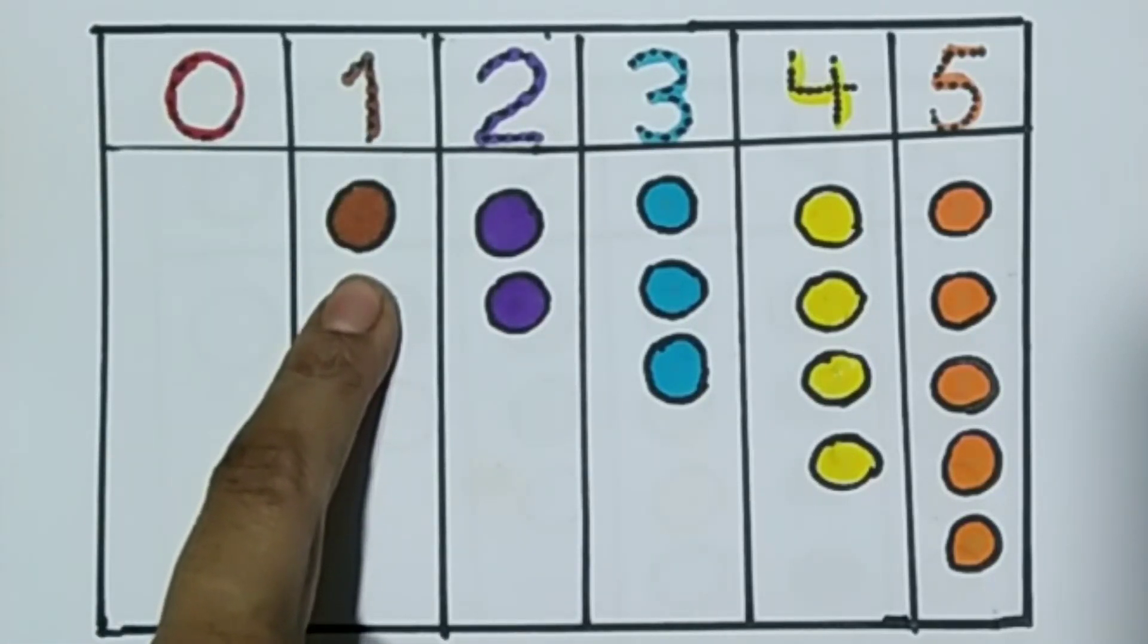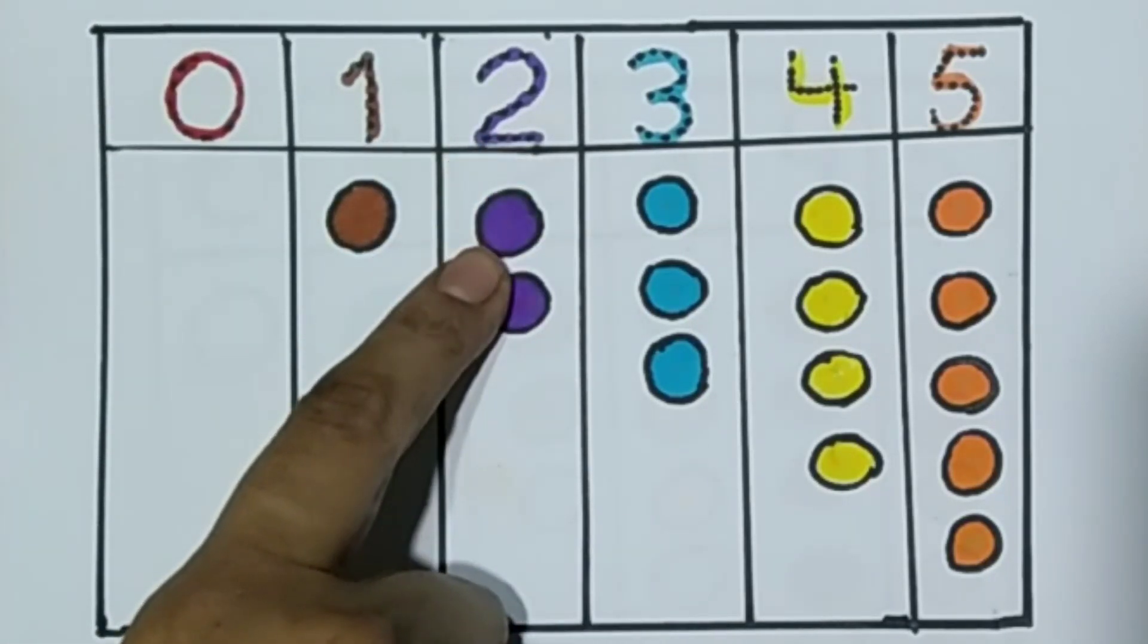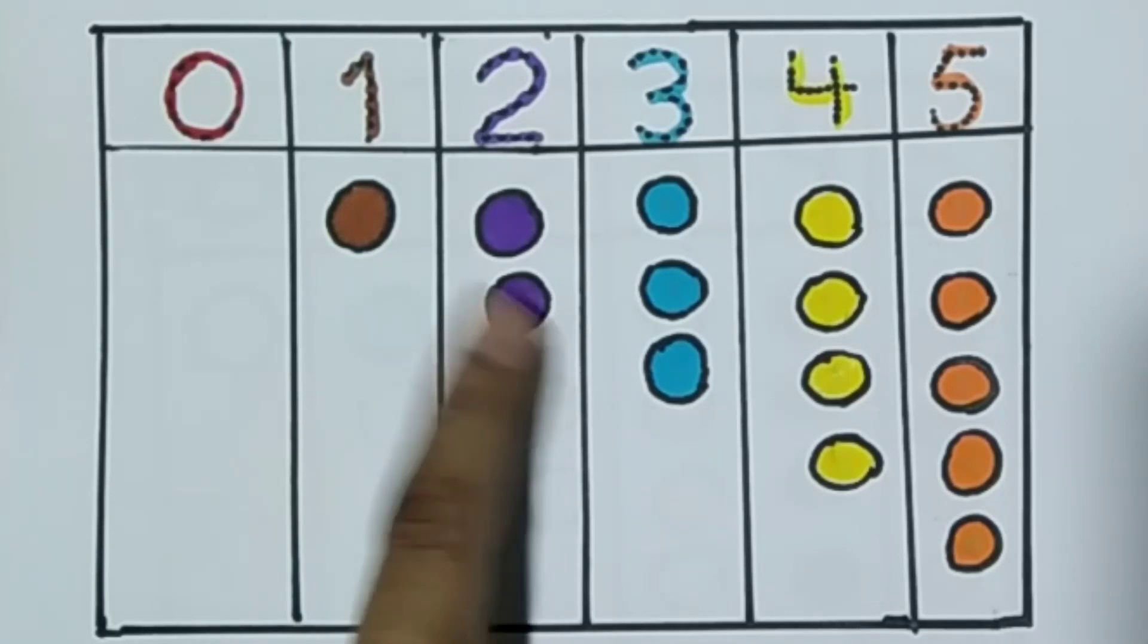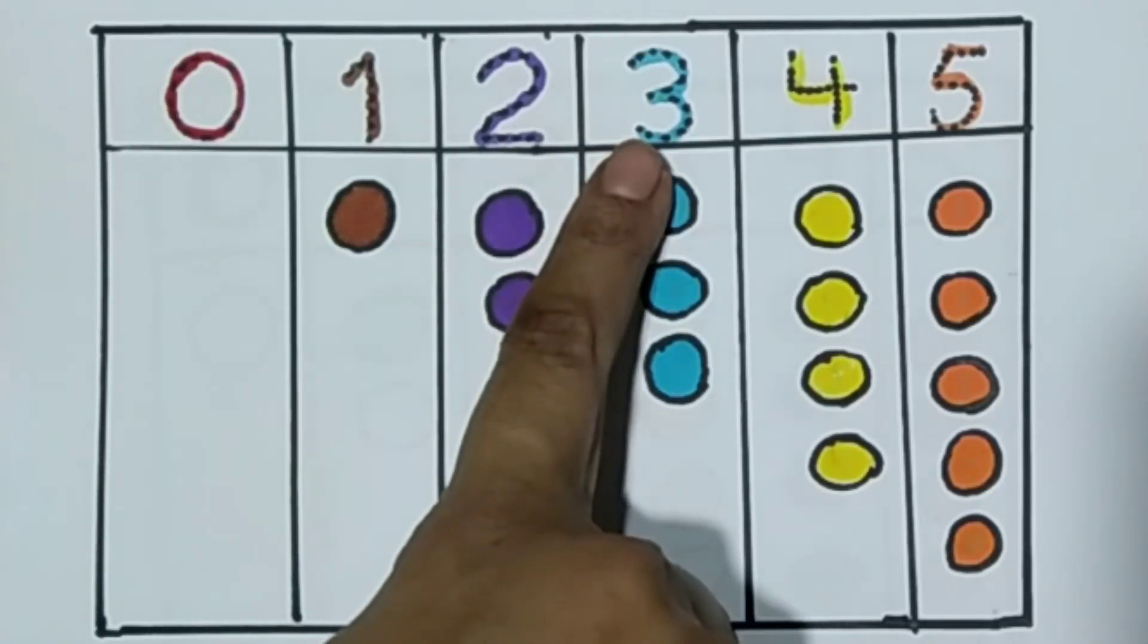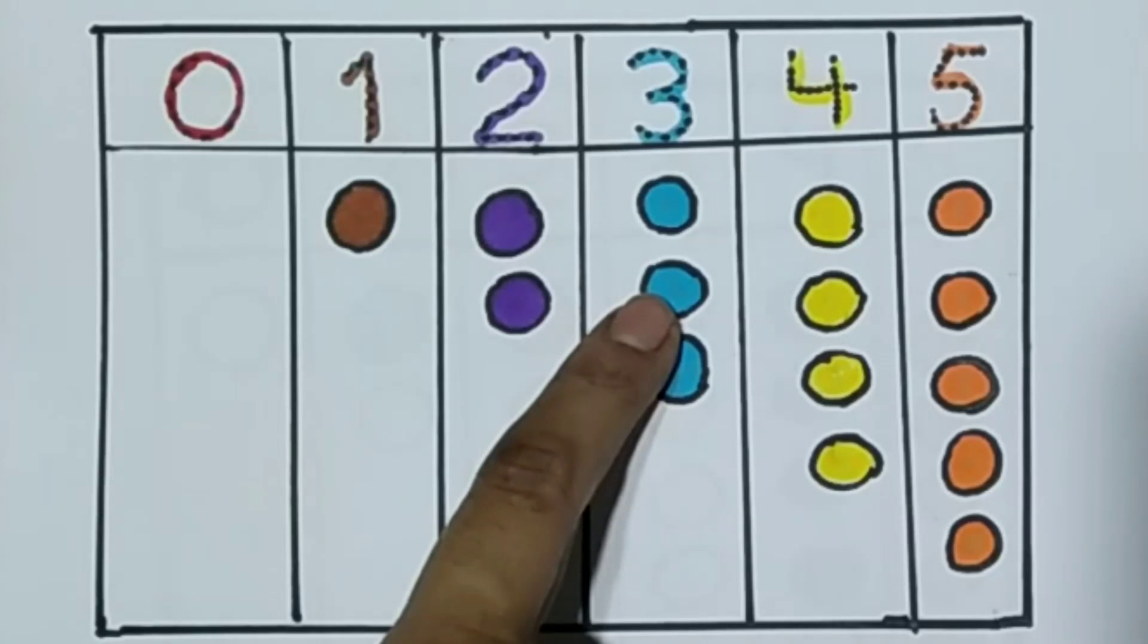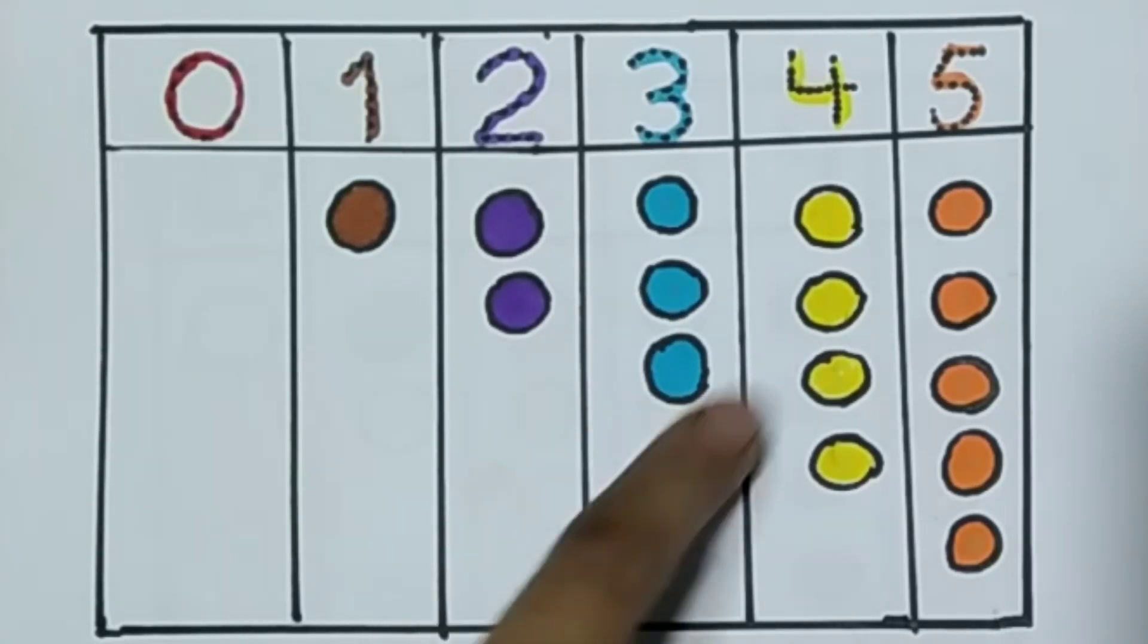Number 1. 1 circle. Number 2. 1, 2. 2 circles. Purple color. Number 3. 1, 2, 3. 3 circles. Blue color.